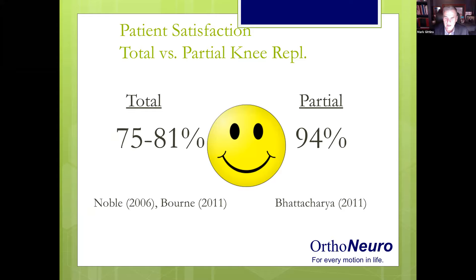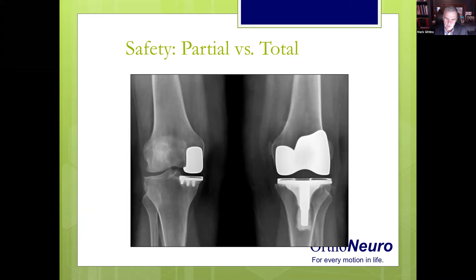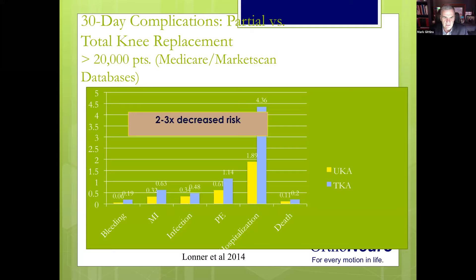It is a finicky operation requiring some experience. Both of these cases were done robotically, which really increases accuracy and reproducibility. Regarding safety — this is a study by Jess Launer out of Rothman — the things that matter: do they bleed, have a heart attack, get infected, get pulmonary embolism, are they hospitalized, do they die? With robotics and partial knee replacements, over 20,000 patients show a two to three times less chance of having comorbidity issues if done the right way with robotics and partial knee replacements.